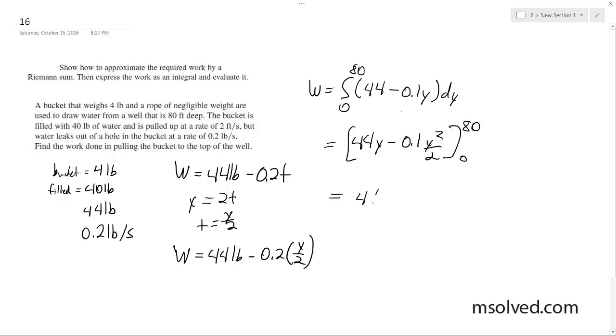Multiplying, so we get 44 times 80 minus 0.1 over 2 times 80 squared. We end up with 3,520 minus 320 is equal to 3,200 foot-pounds of work done. So this is W, and that's it.